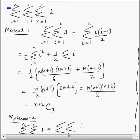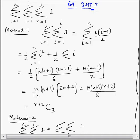This is question 64, 3R test number 5. We have to find triple sigma of 1, where k varies from 1 to j, j varies from 1 to i, and i varies from 1 to n.